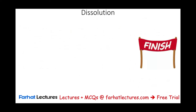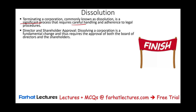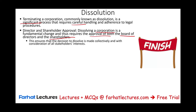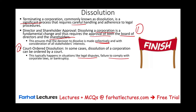Dissolution is another major fundamental change — when the company closes down. Terminating a corporation requires careful handling and adherence to legal procedures. Both director and shareholder approval is necessary since dissolving a corporation is a fundamental change requiring collective consideration of all stakeholders. The company can dissolve itself voluntarily, or a court can order dissolution — typically in situations like legal disputes, failure to comply with corporate laws, or bankruptcies.